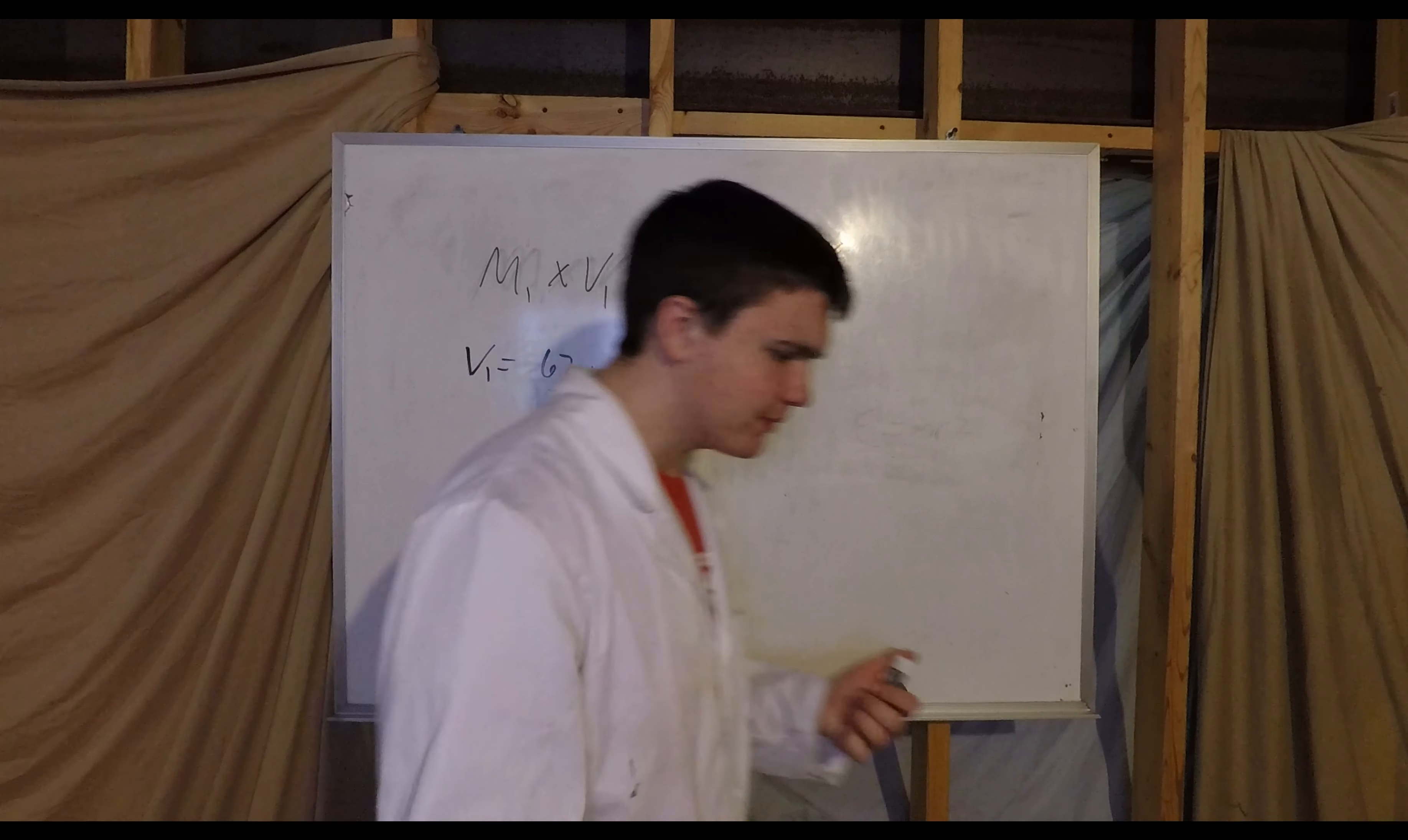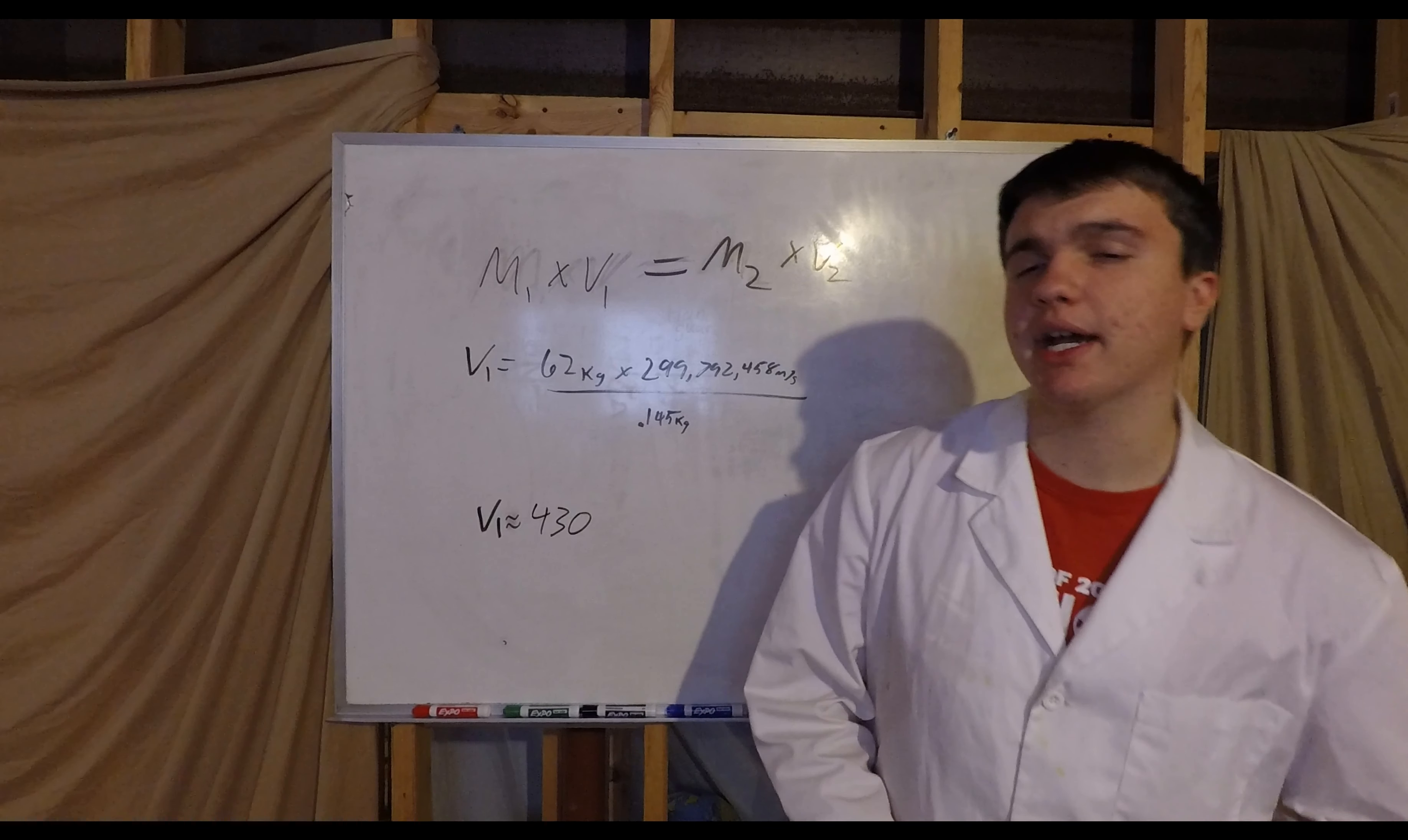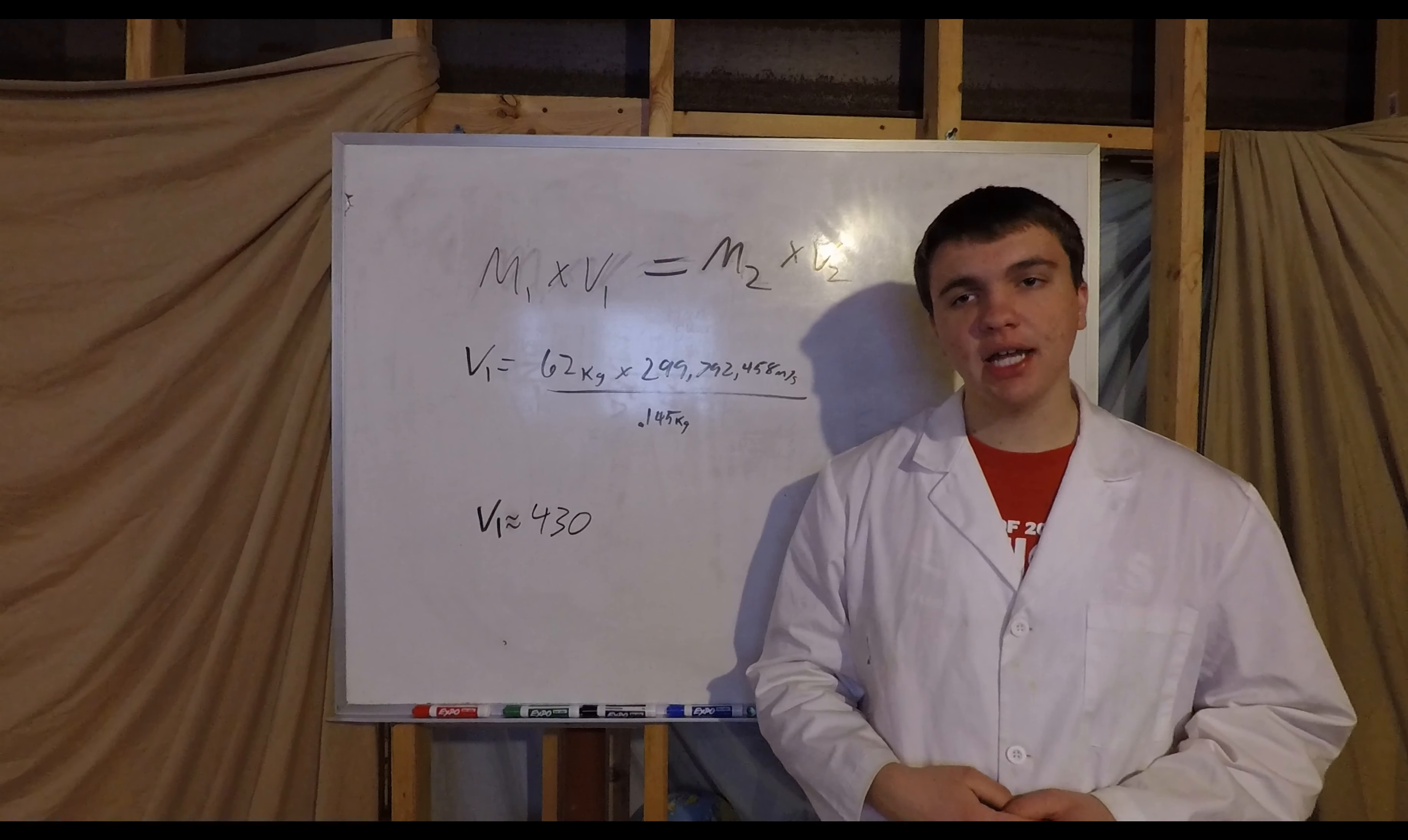However, if you're Superman or some being, maybe you're Shaggy, and you don't want to throw a baseball at 430 c, what if you threw the Empire State Building? Well, here's today's fun fact segment. The Empire State Building weighs 331 million kilograms, which is greater than the speed of light. Which means if you threw it at 1 meter per second, you'd be traveling faster than the speed of light.